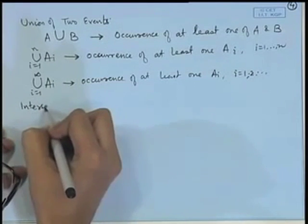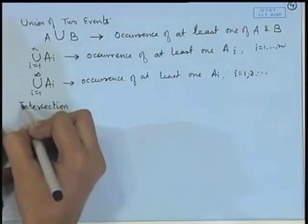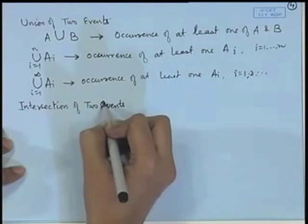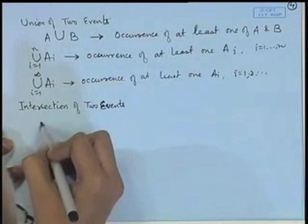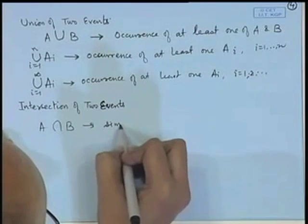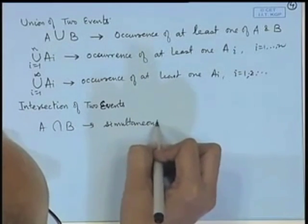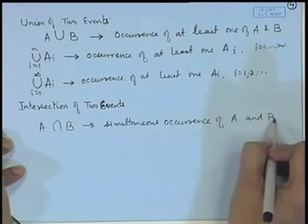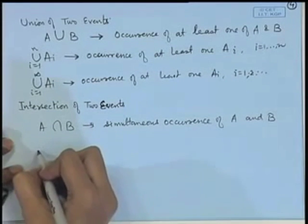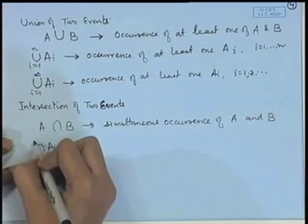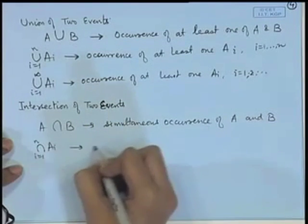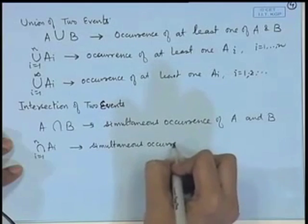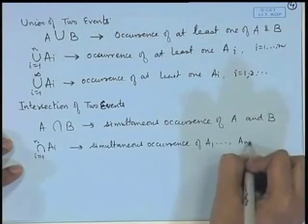The intersection of two sets denotes the set of all points common to the two sets. In probability theory, A ∩ B means the simultaneous occurrence of A and B — that is, both events A and B are deemed to have occurred. Similarly, the intersection of n events A₁, A₂, ..., Aₙ means simultaneous occurrence of all events A₁, A₂, ..., Aₙ — that is, all of them occur. We can consider intersection of a countable collection of events in a similar way.